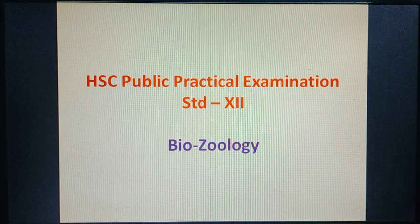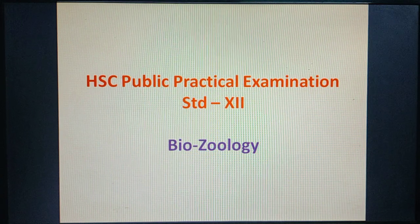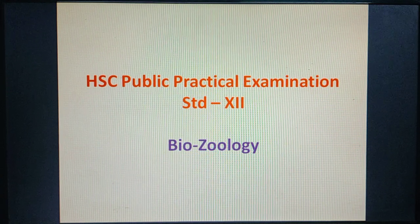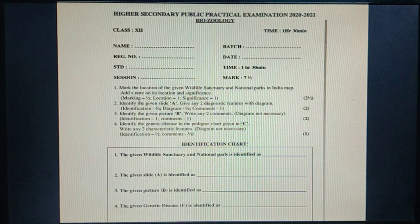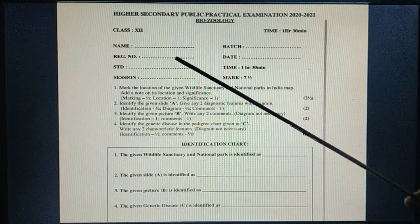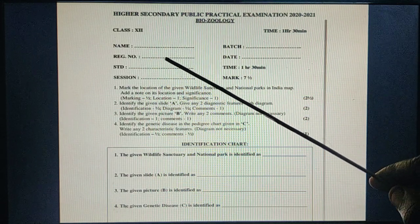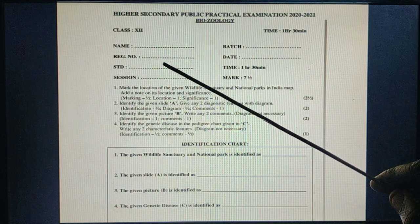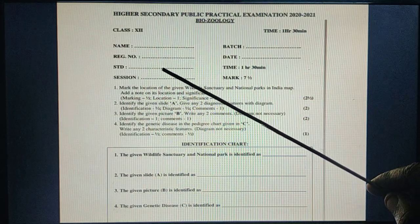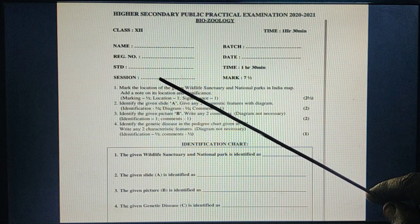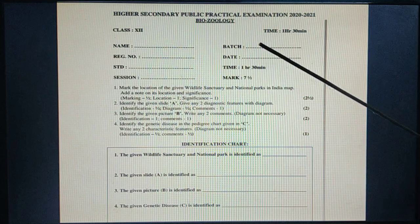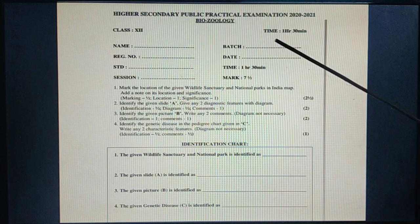First, we can discuss about the question paper. Here you can write the name, register number, standard 12B, session forenoon, and batch — whether first batch or second batch.